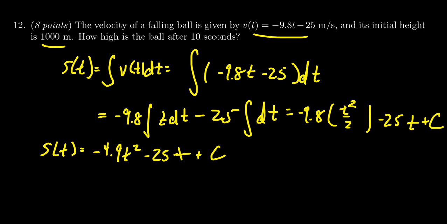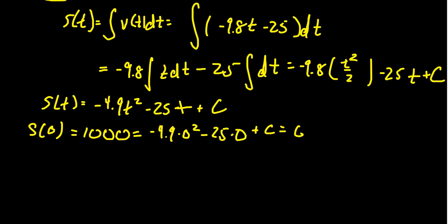This gives us the function, but we also know the initial value. The initial height, that is s at 0, when no time has elapsed, the initial height is going to be 1000. If we plug zero into our function, we get -4.9 times 0² minus 25 times 0 plus c. This simplifies just to be c, so c equals 1000. We now have our position function s(t) = -4.9t² - 25t + 1000.